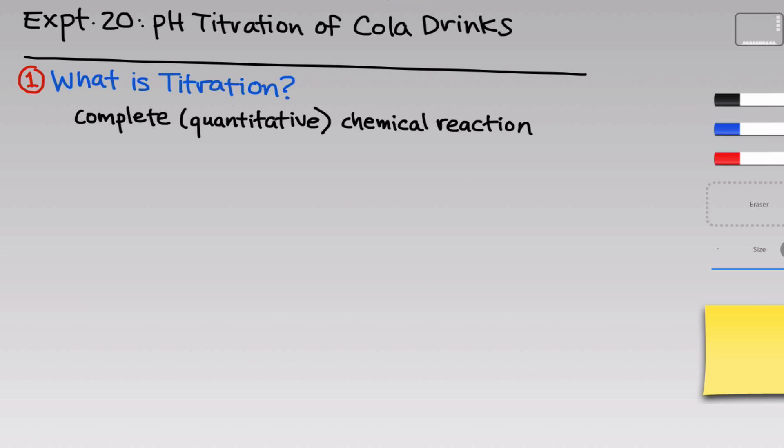The key is that the reaction has to be complete — what we call a complete and quantitative chemical reaction. Quantitative just allows us to use the tools of stoichiometry without worrying about issues of chemical equilibrium or back reactions. The reaction needs to be irreversible and go only in the forward direction. A good example is an acid-base reaction with a strong acid or base.